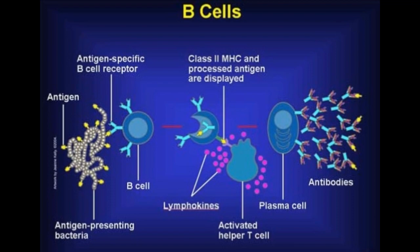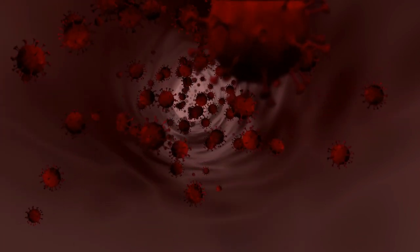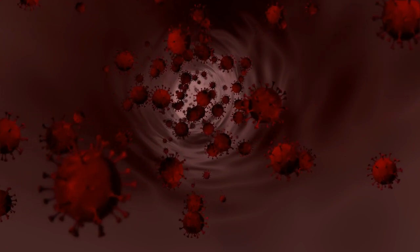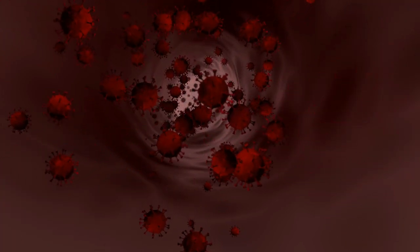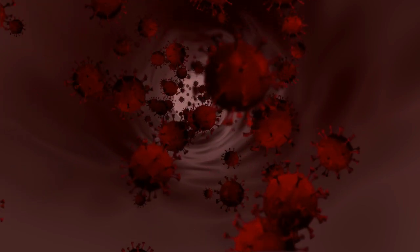The B-cell becomes a large plasma cell factory that produces identical copies of specific antibody molecules at an astounding pace, up to 10 million copies just within an hour. Just imagine, within an hour 10 million copies are being produced that fight with the antigen and we get our immunity.